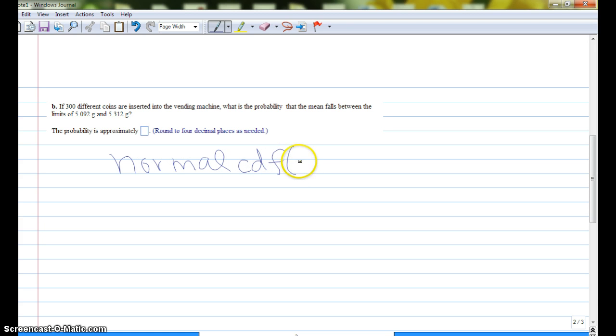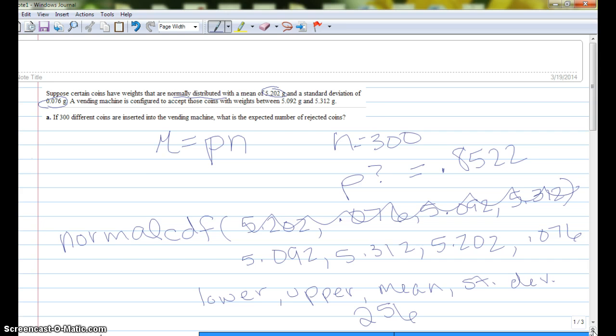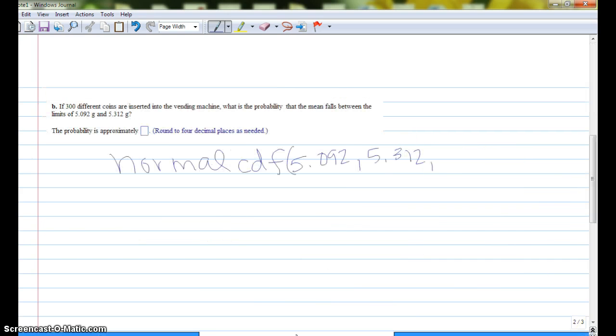So here this is where our mean, we're still going to do normal CDF, and we're going to do our lower limit, 5.092, and our upper limit, 5.312. Here our mean doesn't change, so the mean for the problem was 5.202.